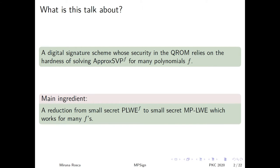The goal of my talk is to describe a digital signature scheme whose security in the quantum random oracle model relies on the hardness of solving the approximate shortest vector problem in many lattices which depend on some polynomials f. The main ingredient of our construction is a reduction from polynomial learning with errors for an arbitrary defining polynomial f among exponentially many to a variant of middle product learning with errors that allows for small secrets compared to the working modulus.